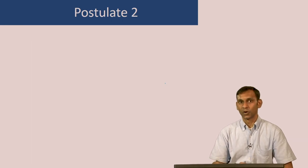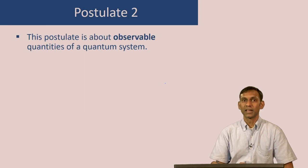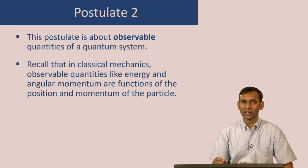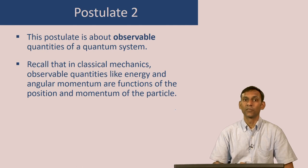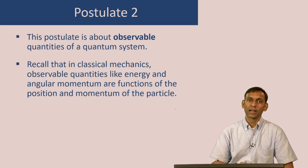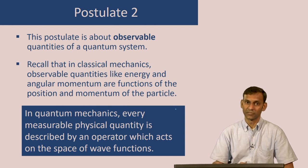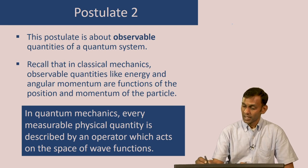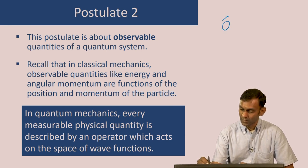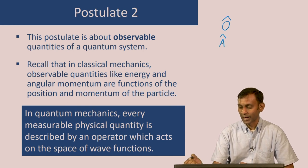Let us now look at postulate 2, which is about observable quantities of a quantum system. In classical mechanics, observable quantities like energy and angular momentum are functions of the position and momentum of the particle. In quantum mechanics that is different: every measurable quantity is described by an operator, which acts on the space of wave functions. An operator, often denoted Ô or Â, is an object that operates on a function and gives another function in general.